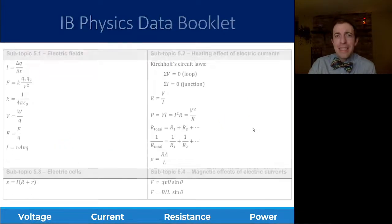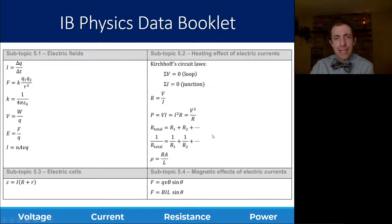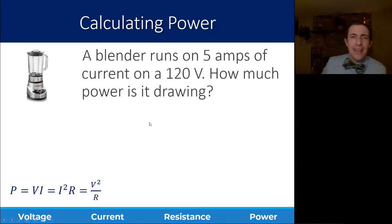These three equations will all calculate for power. They just use different combinations of those other properties that we've referred to. In the data booklet for IB, you are given all three variations on this, which is really unnecessary. You don't need all three. If you know Ohm's law as well, you can always solve for an unknown in two steps. But here, you're given all three variations as needed.